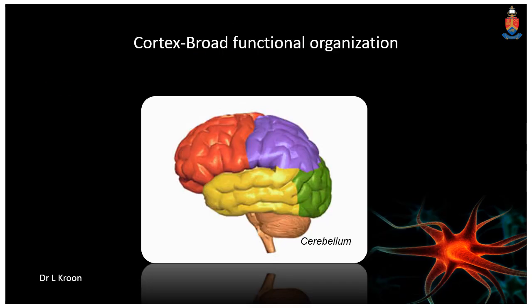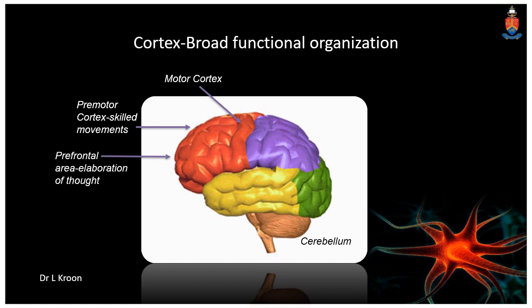I'll broadly talk about the functional organization of the cortex, starting with the frontal lobe, coded in red. Closest to the central sulcus, we have the primary motor cortex, which functions in the organization of motor behavior. Just anterior to this area, we have the premotor areas, associated with premotor planning and skilled movements. Moving more anteriorly, we have the prefrontal areas, involved in higher-level cognitive processes and thinking. Here in the inferior frontal lobe, over the pars orbitalis, triangularis, and opercularis, we have Broca's area, which is involved in expressive language.